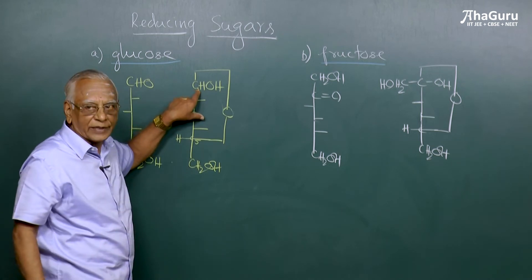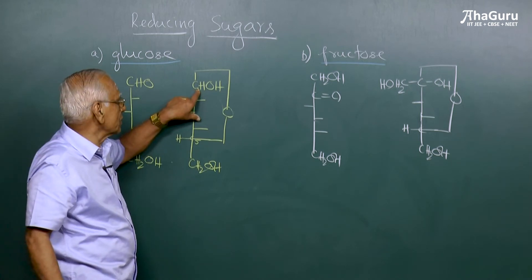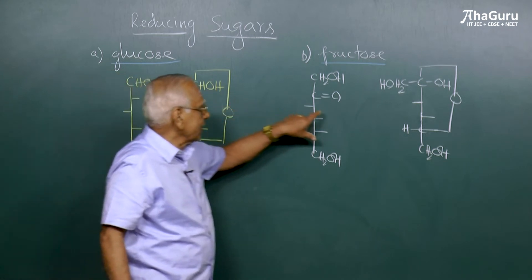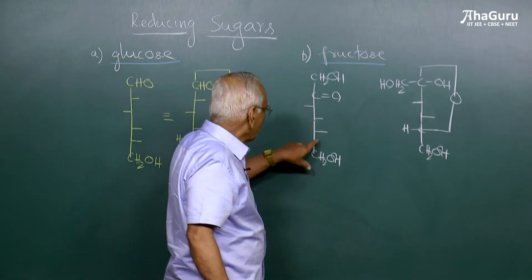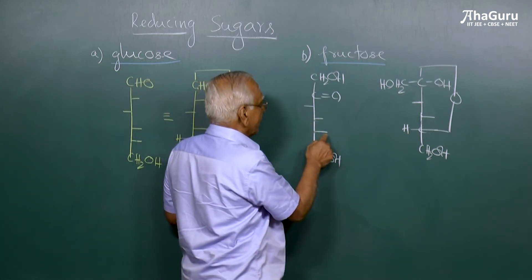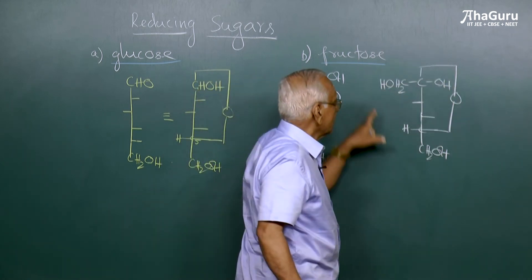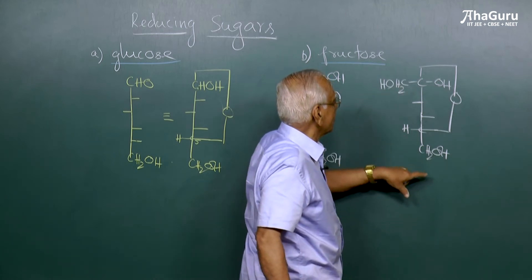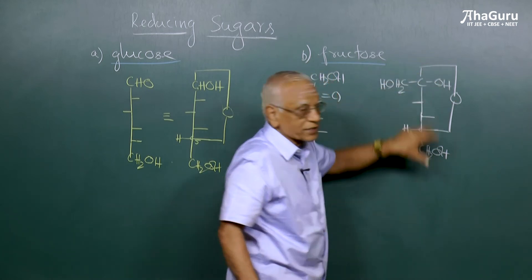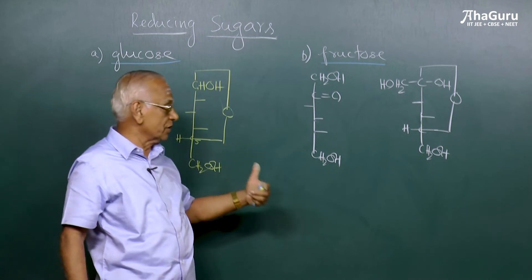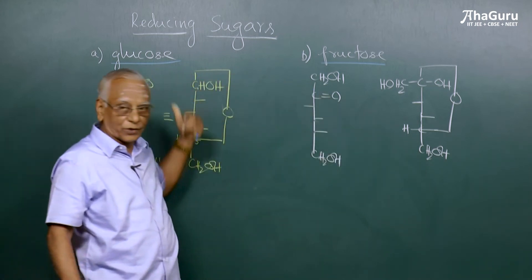Of which the C1 carbon atom is free, which has got the free OH group. In the case of fructose, the OH group of the C5 carbon atom has combined with the ketonic group in the second carbon atom and we are able to write the closed ring structure, a five-membered ring structure. This is the six-membered ring structure. The furanose structure and pyranose structure here.